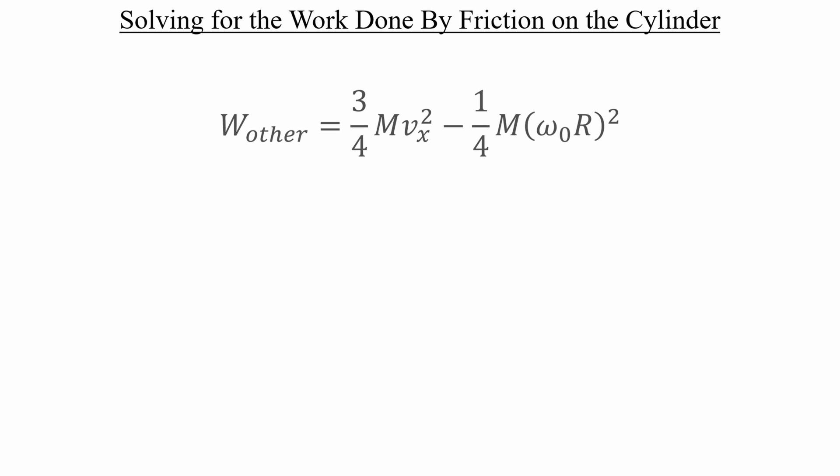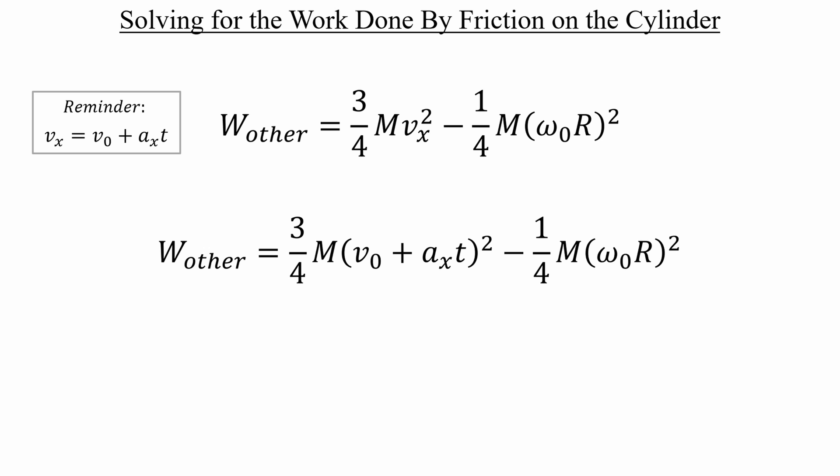Our first two terms can now be added together. And if we use another kinematic equation, we can relate the center of mass velocity to the known linear acceleration. Once we plug that in, we can eliminate the initial center of mass velocity term, since we know that's equal to zero.